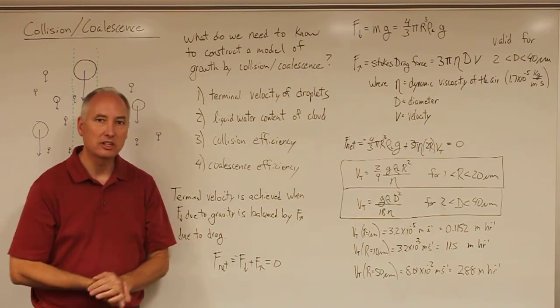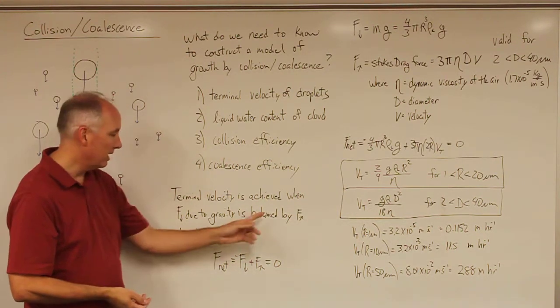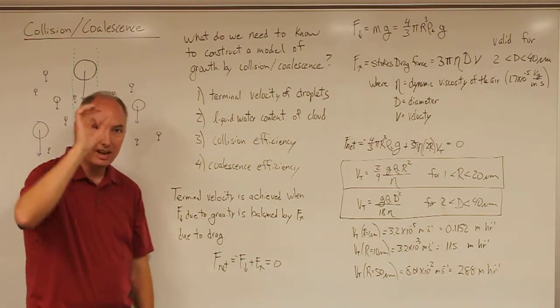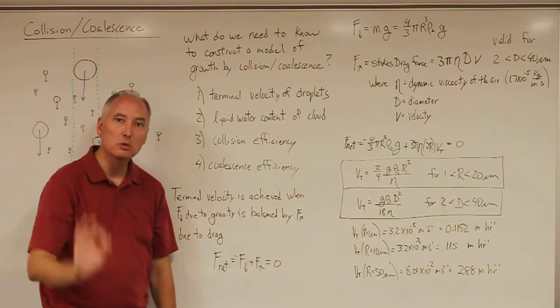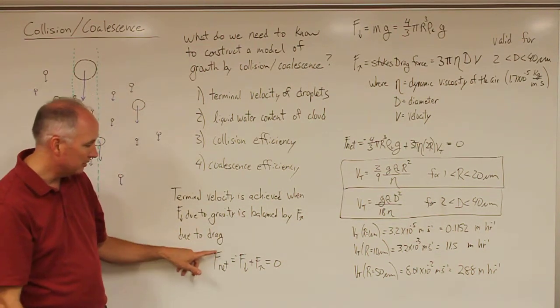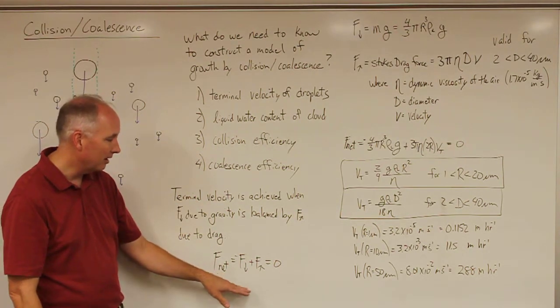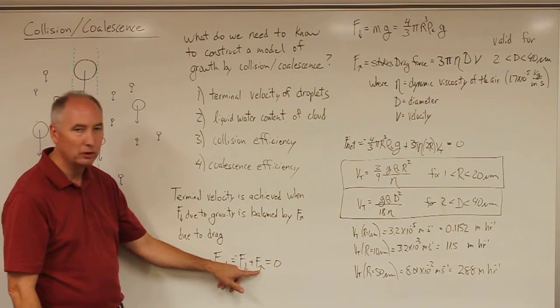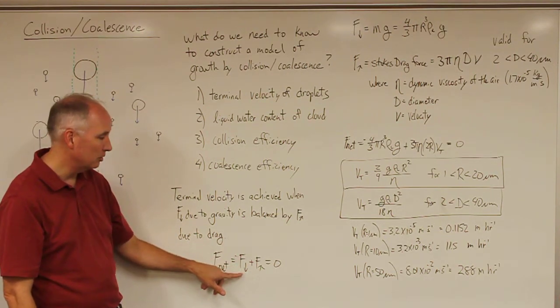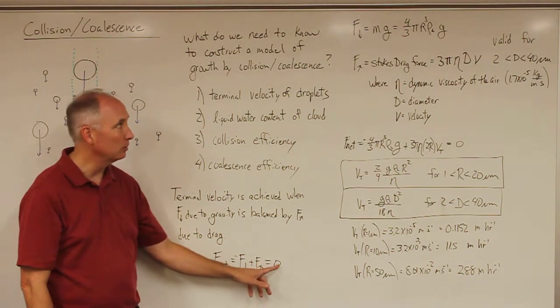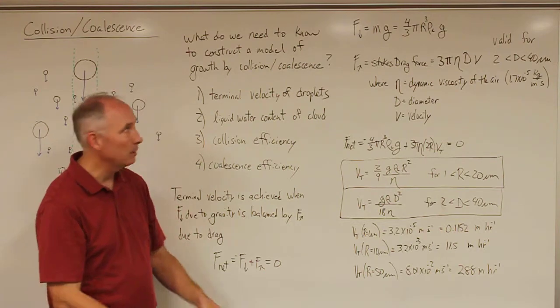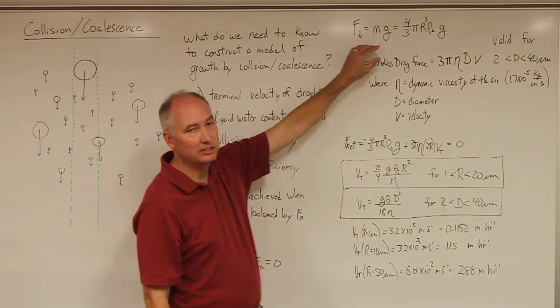and then there's a resistance force, a drag force that is caused by that droplet trying to move through the air. By definition, a terminal velocity is achieved when the net force of adding together the upward directed force positive and the downward directed force negative is going to be equal to zero. So the downward directed force of gravity is very simple.